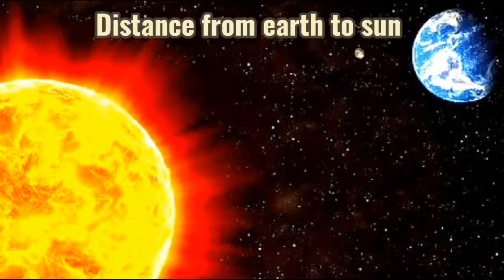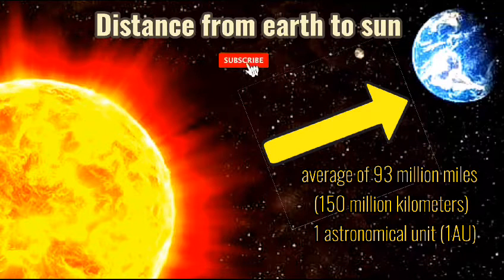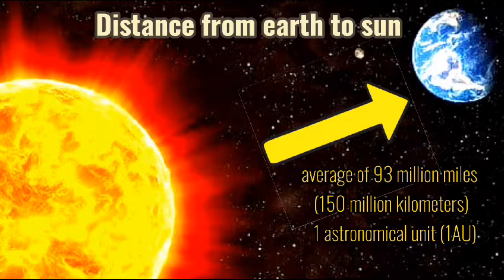Do you know how far the Earth is from the Sun? The distance between them is about 93 million miles, 150 million kilometers. This distance is also called one astronomical unit.